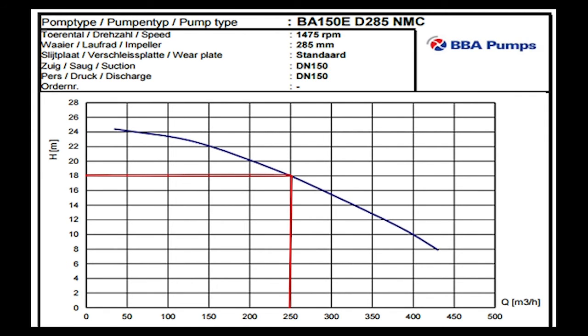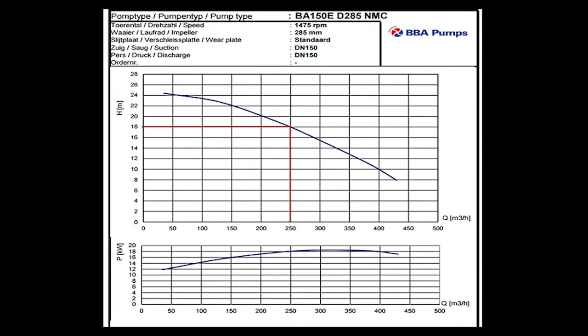From this duty point, we can extend the line vertically to the second segment. Now we can read the absorbed power at the duty point of 250 cubic meters an hour. This is, as you can see, 18 kilowatts. This is important information, for now we know that we need to install a motor of at least 18 kilowatts.